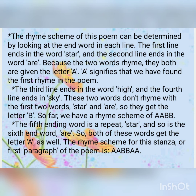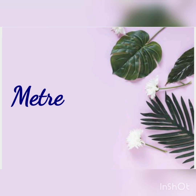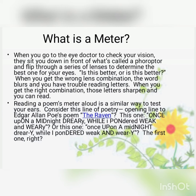Next, what is meter? When you go to the eye doctor to check your vision, they sit you in front of a phoropter and flip through a series of lenses to determine the best one for your eyes — 'Is this better or is this better?' When you get the wrong lens combination the words blur and you have trouble reading; when you get the right combination those letters sharpen and you can read properly. Reading a poem aloud is a similar way to test your ears.